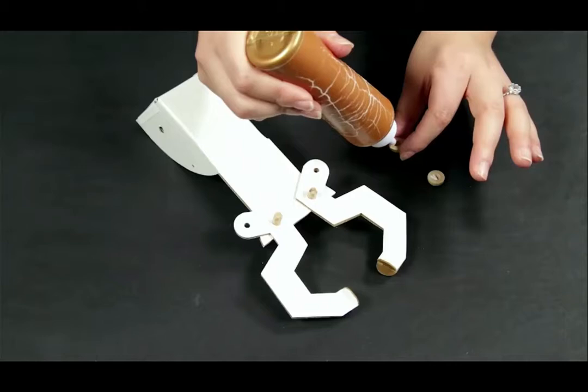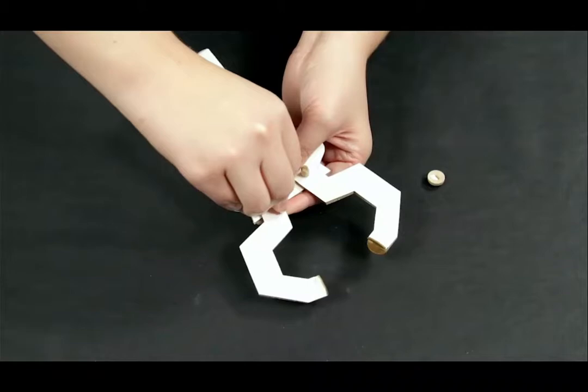Glue wooden end caps over the exposed ends of the dowels. Make sure not to use too much glue. The fingers need to move freely.